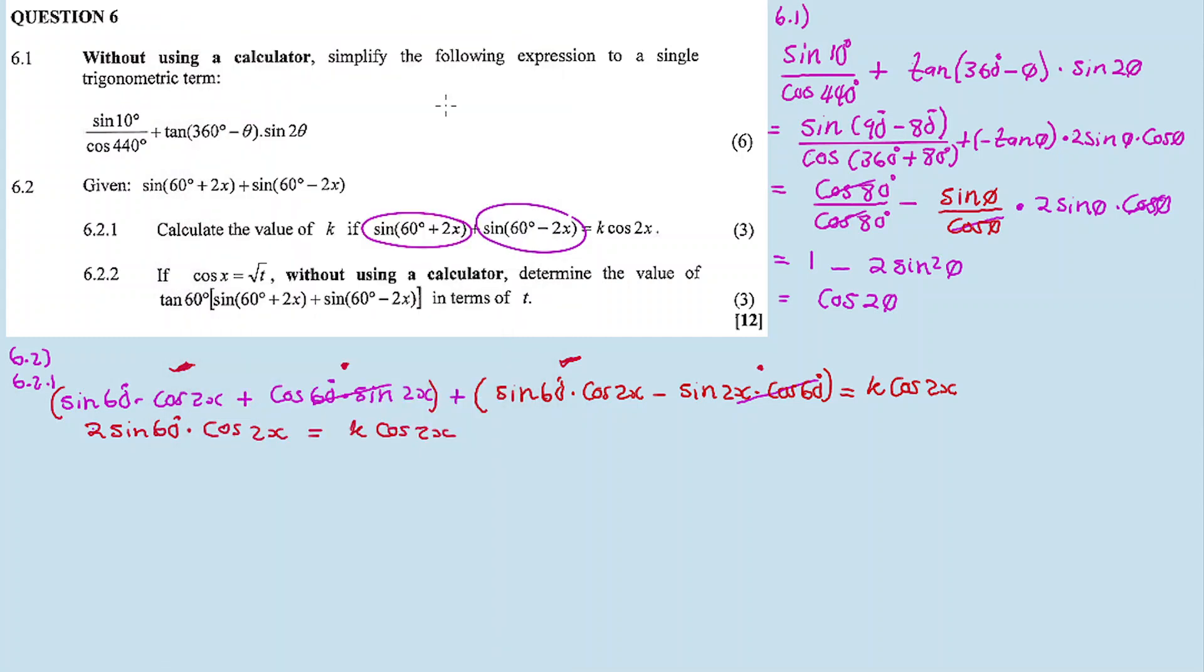These are like terms - they will cancel each other out. We get 2 sine 60 degrees cos 2x equal to k cos 2x. What is sine 60 degrees? It's square root 3 over 2. Cos 2x cancels out. The 2s cancel, so square root 3 equals k.